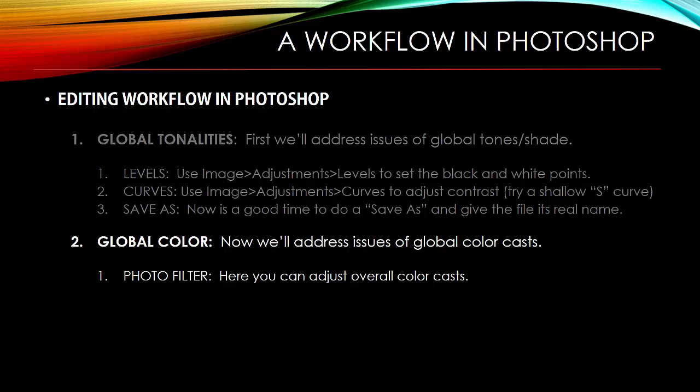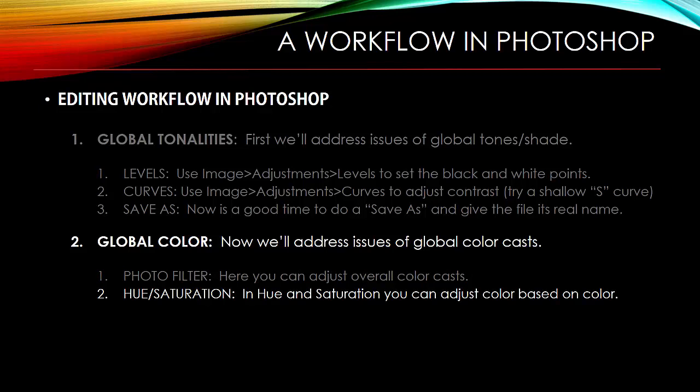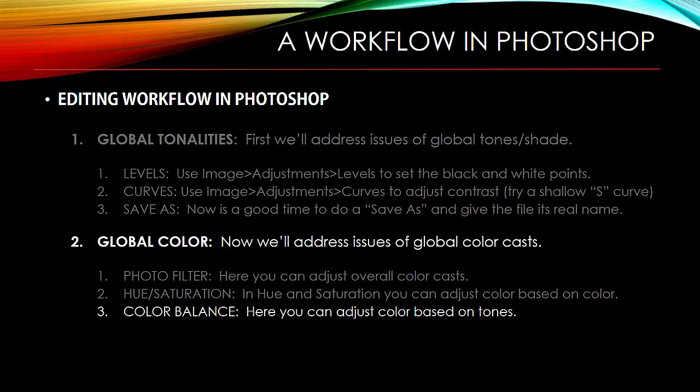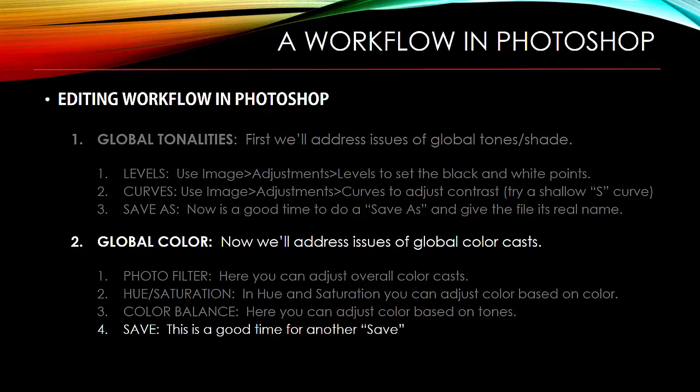First, we'll use the Photo Filter — Image > Adjustments > Photo Filter — and with this you can adjust overall color casts of the image. Then we'll open Image > Adjustments > Hue and Saturation, where we're going to be able to make color adjustments based on the underlying color, so we can tweak specific colors. And then we're going to go to Image > Adjustments > Color Balance, where you're going to be able to adjust color based on the tones — shadows, highlights, or midtones — and separate out the color changes you make based on those tones. Now save it again.